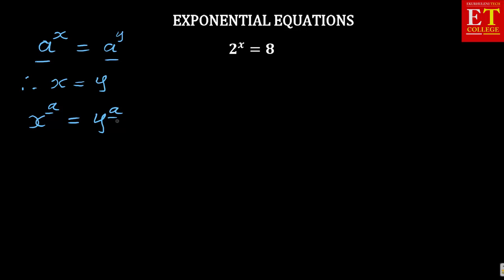Since the exponents are the same, therefore it means x is also equal to y. So, these are the most common laws to remember when dealing with exponents. Now, let us look at the first problem. It says: simplify 2 to the exponent x is equal to 8.